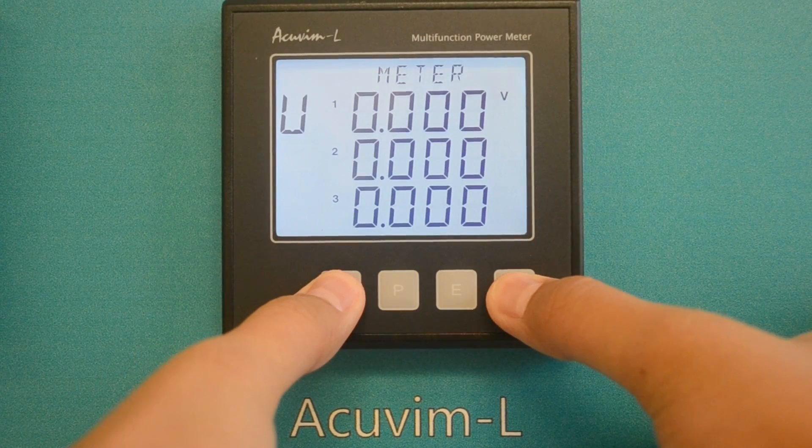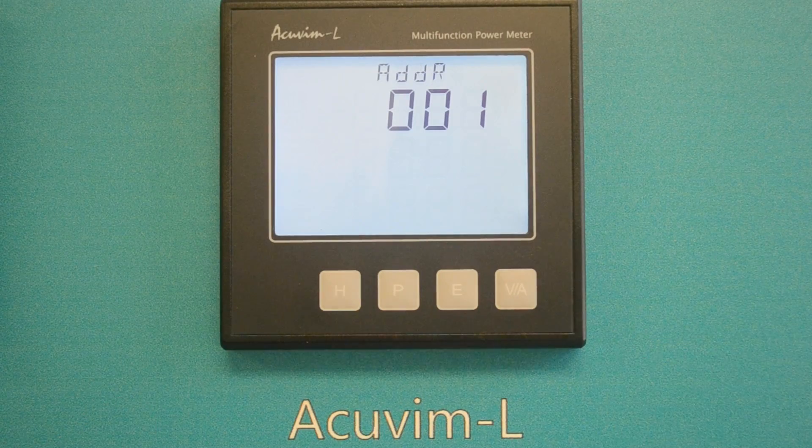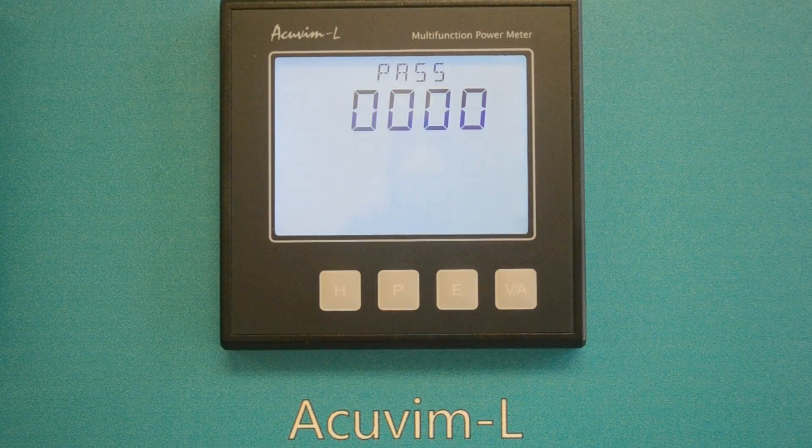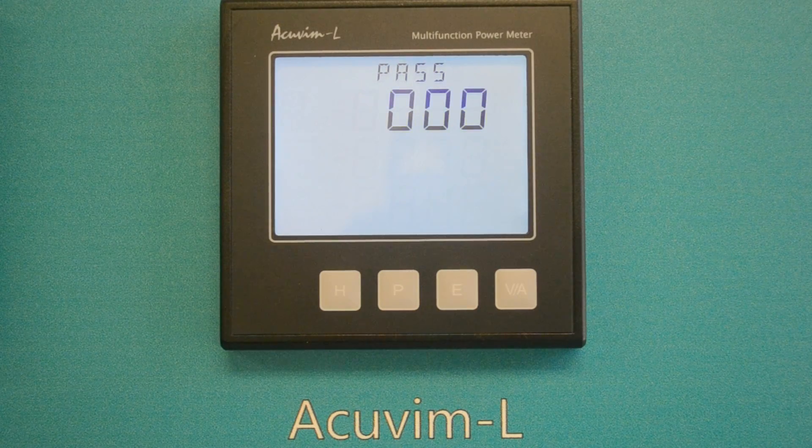If an incorrect password is entered, the screen will jump back to the metering data mode. Next, we press the VA key to enter system settings.